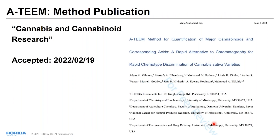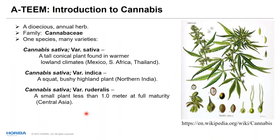We recently had a paper accepted in Cannabis and Cannabinoid Research explaining our primary methodology as applied to various strains or cultivars of Cannabis sativa. Our main collaborator for this publication is the El-Sohly laboratory at the University of Mississippi. Cannabis sativa, indica, and ruderalis are the natural cultivars associated with different geographical regions. Sativa and indica are the most commercially known in the legal hemp market.